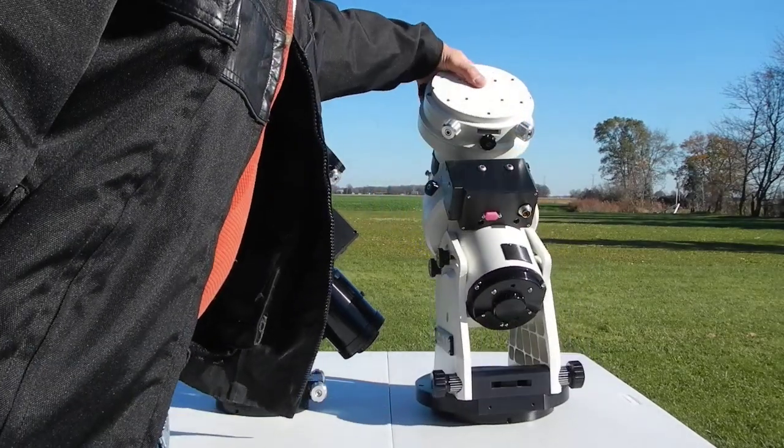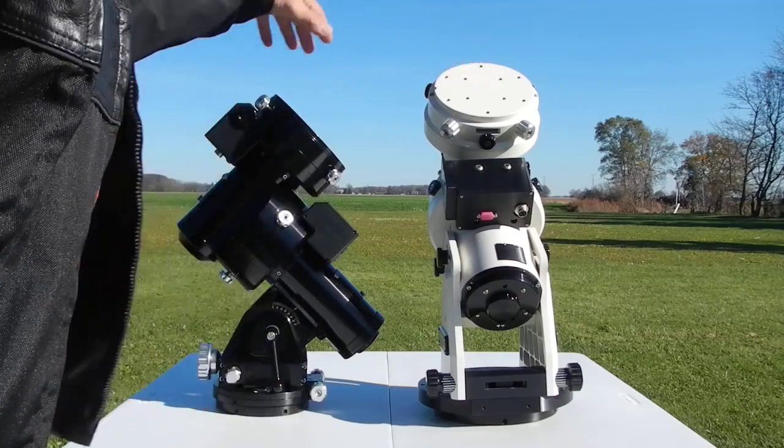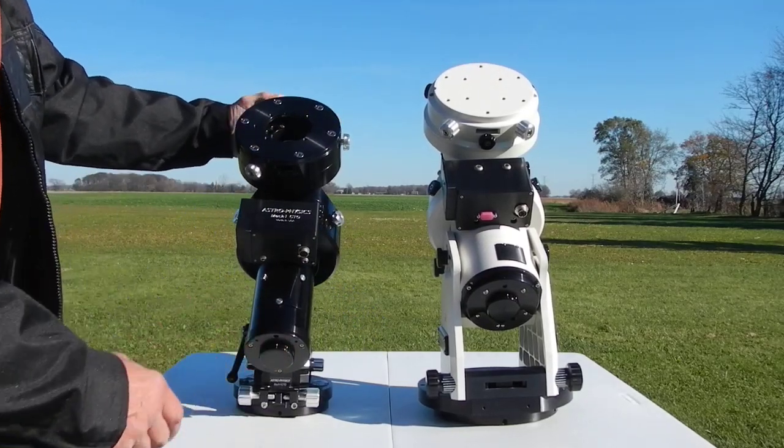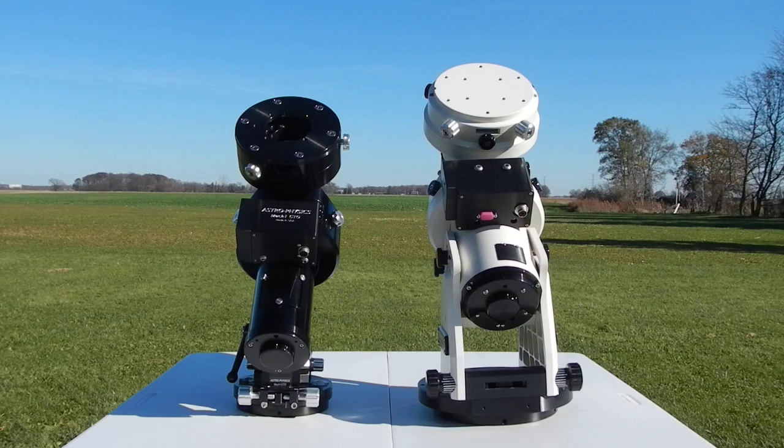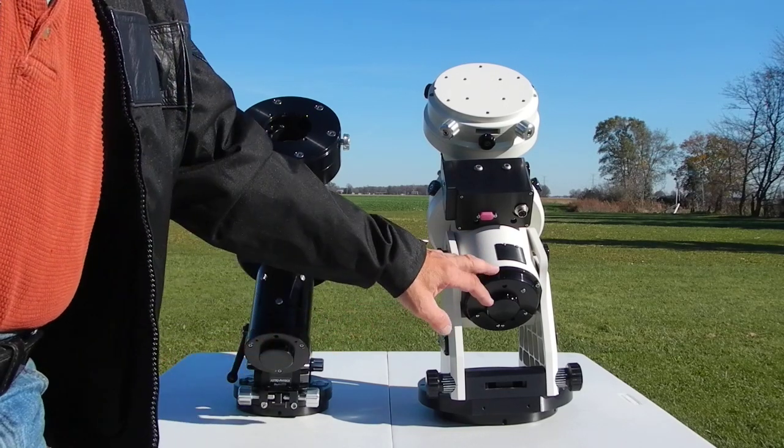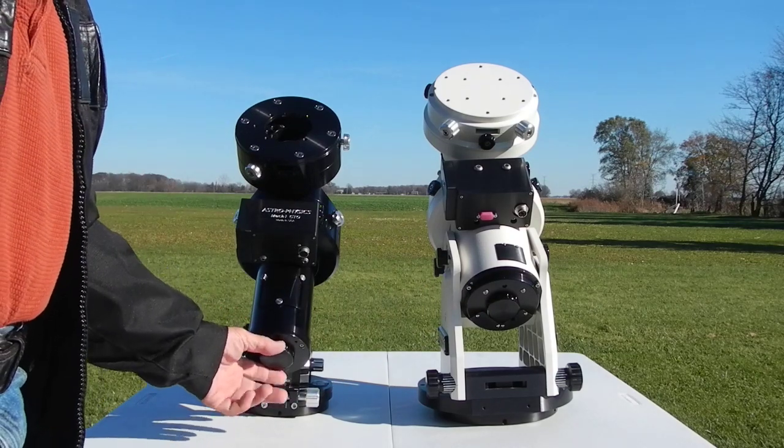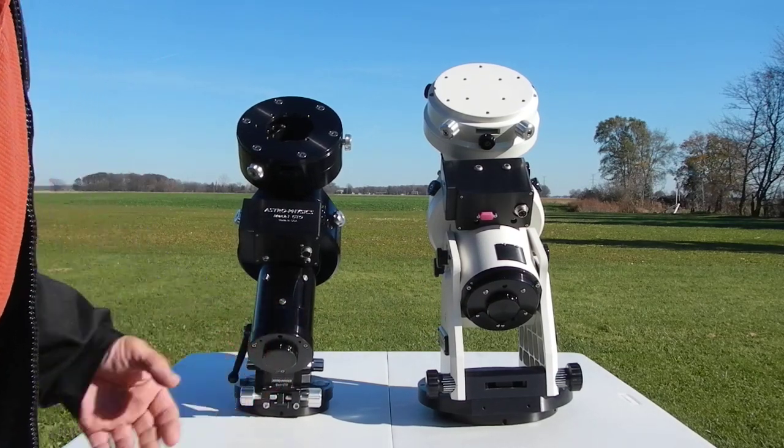If we turn it to the back side, you can see the polar axis and the difference between the two. This is set up, as is the 1100, for the Polar Scope, their Polar Scope they came out with a couple of years ago.